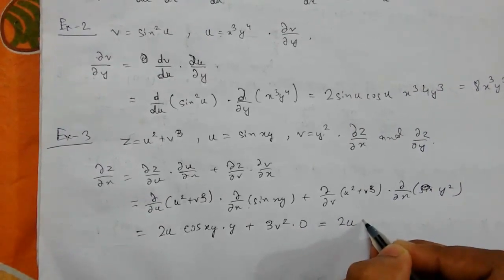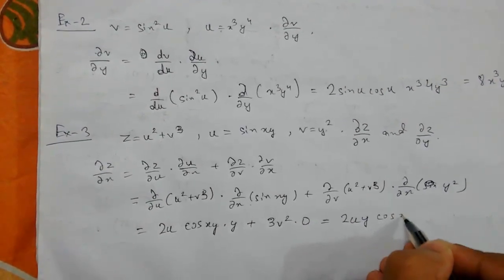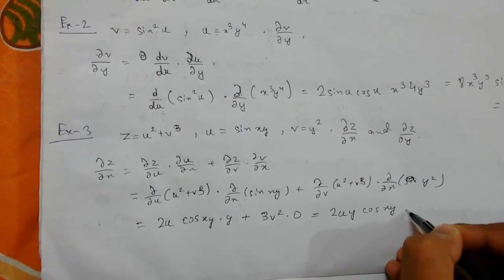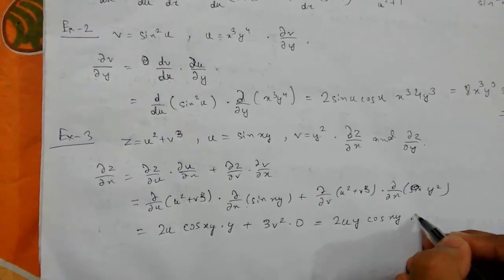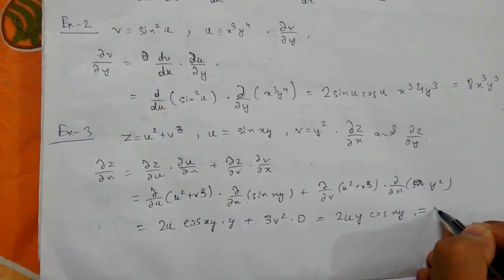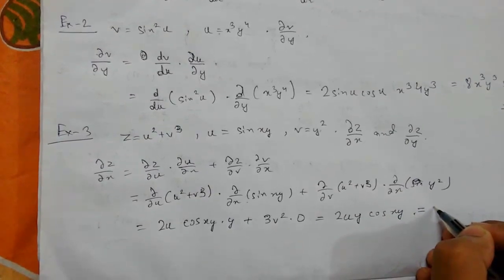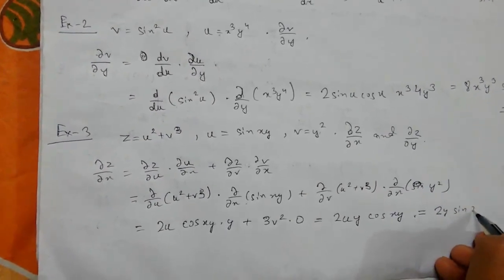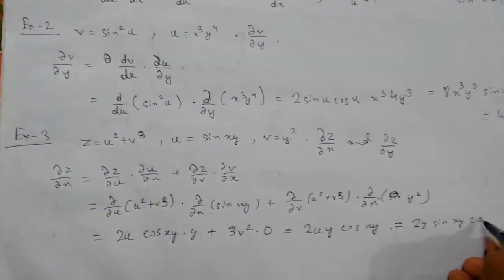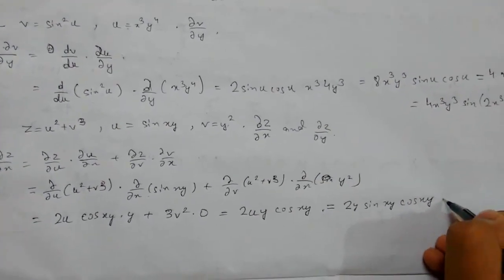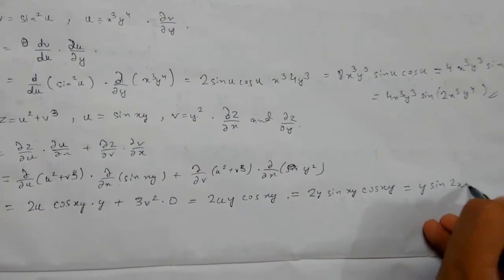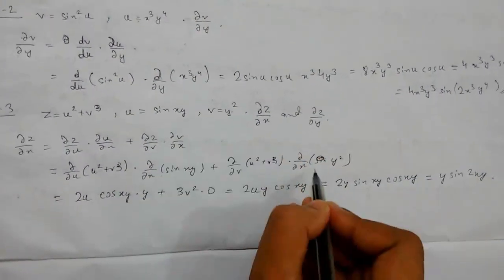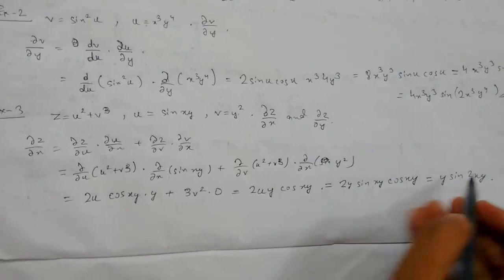This turns out to be 2u·y·cos(xy). Now putting u = sin(xy) we get 2y·sin(xy)·cos(xy), which equals y·sin(2xy).